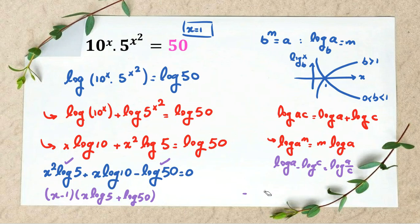So we factorize this part, it equals 0. The first part is 0, which is x equals 1 we found, or second part is 0, means x log 5 plus log 50 equals 0.